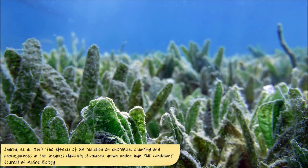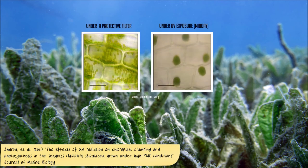Especially immobile organisms, like plants or sessile animals, have had to develop different strategies to cope with this radiation. The seagrass species Halophila stipulacea, for example, has been shown to use a clumping of their chloroplasts under high UV stress. This protects the plant by lowering overall electron transport rates — for example during midday — as these would otherwise lead to potentially harmful high energy levels in the cells. Chloroplast clumping therefore functions as a means of protecting most chloroplasts from higher radiances, including UV.